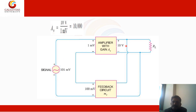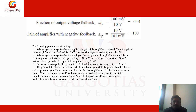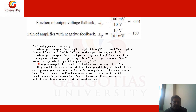The amplifier with gain Av produces 10 volts output. The fraction of the output voltage fed back is 100 mV / 10 V = 0.01, so the feedback fraction mv = 0.01. The gain of the amplifier with negative feedback is 10 / 101 mV, which is approximately 100. When negative voltage feedback is applied, the gain of the amplifier is reduced — without feedback the gain is 10,000, whereas with negative feedback it is only 100.